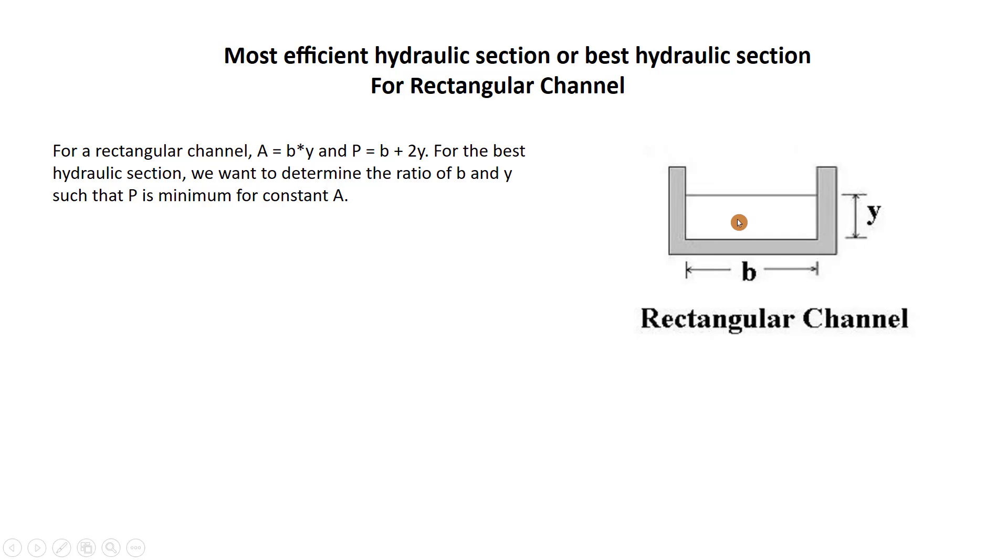So to get the most efficient hydraulic section we have to minimize the wetted perimeter. Why? Because wetted perimeter has contact with the water which causes the loss of head. Minimizing wetted perimeter means minimizing head loss. We have to find the ratio of B and Y such that P is minimum for a constant A.